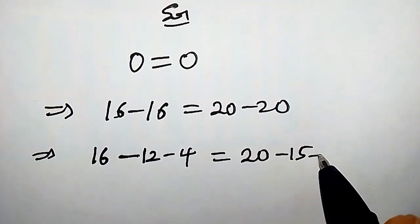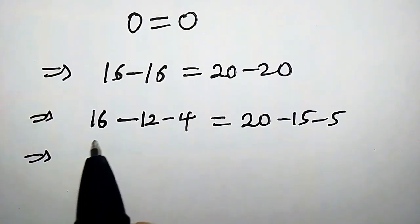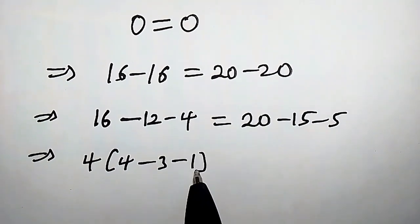So this implies we can pull out 4 here because 4 is common. So we're gonna have 4 into 4 minus 3 minus 1 equals, likewise here 5 is common.